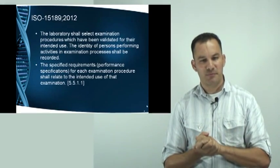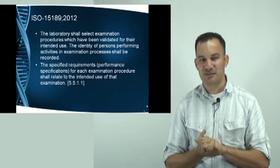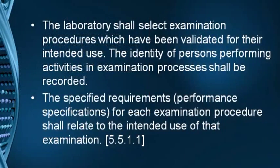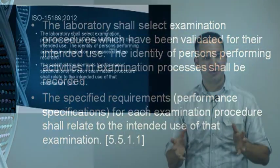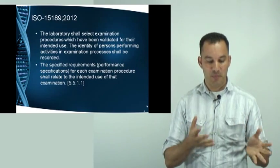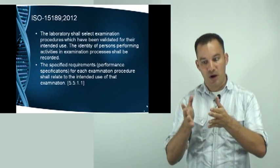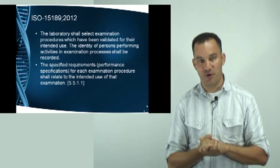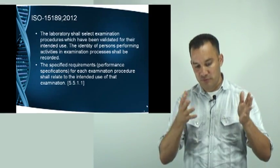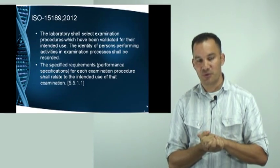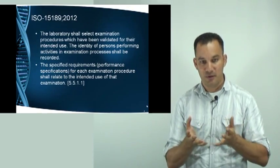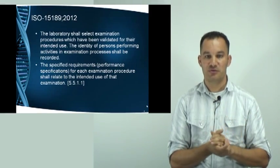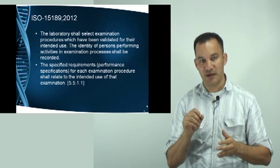The following rule states that laboratories shall select examination procedures which have been validated for the intended use, and that the identity of the persons involved in the examination process shall be recorded. Afterwards, you can always go back to the person and ask whether they were involved in the validation. It should always be clear who was involved and who ultimately signed off all the documents.